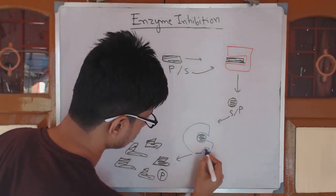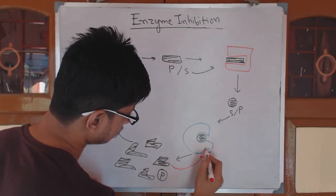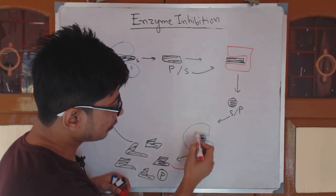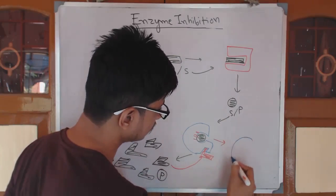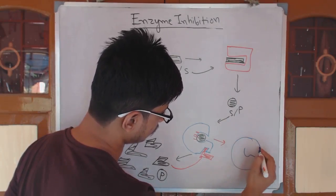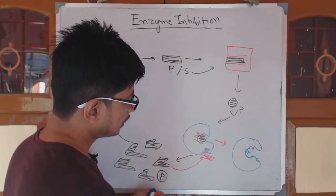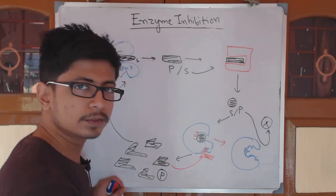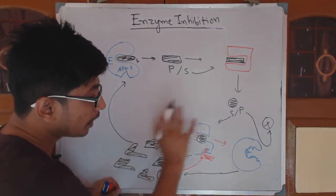One molecule of the final product will go and bind to the allosteric site of an earlier enzyme. Upon binding, it will modify the active site. Due to this modification, the active site changes shape so that the substrate can no longer bind to that enzyme, and product preparation is halted.